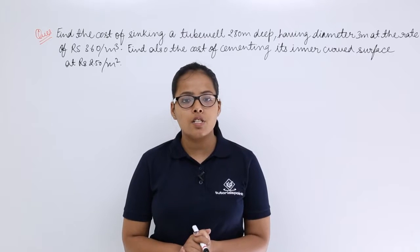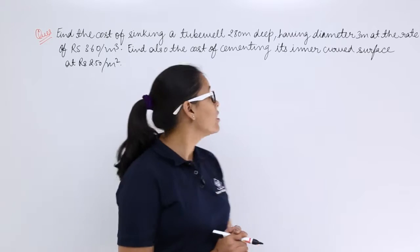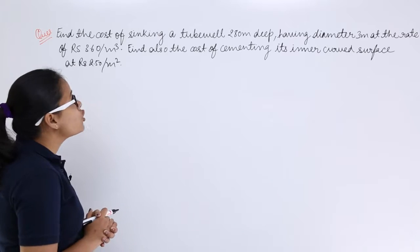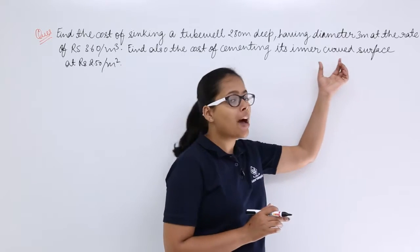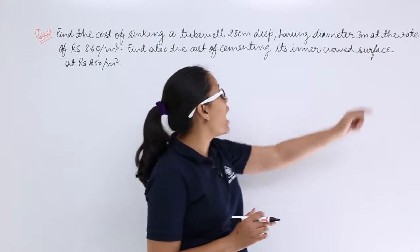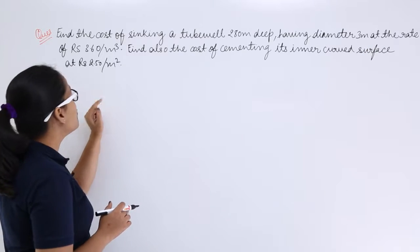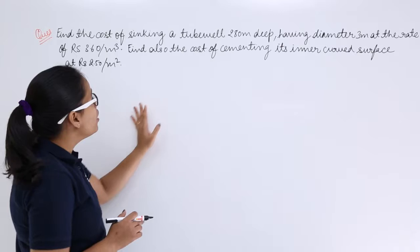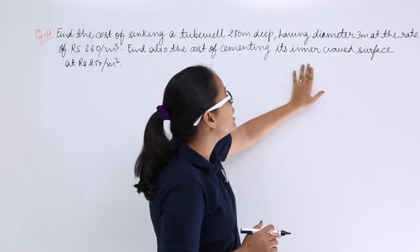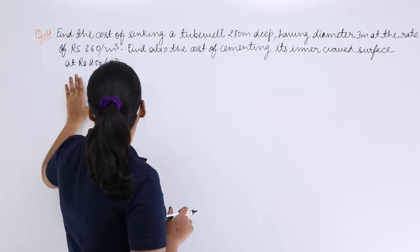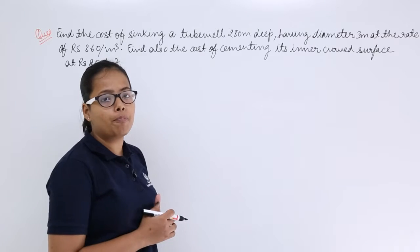Hey guys, let's discuss this problem. This problem says, find the cost of sinking a tube well which is 280 meters deep having a diameter of 3 meters at the rate of rupees 3.6 per meter cube. Find also the cost of cementing its inner curved surface at the rate of rupees 2.5 per meter square.